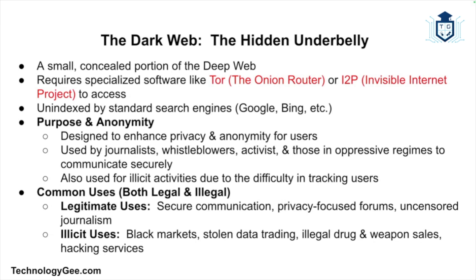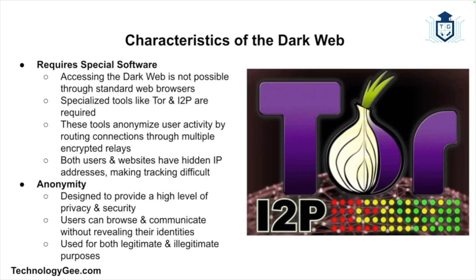The dark web is a small, intentionally hidden portion of the deep web that is not only unindexed by search engines but also requires special software to access. It is a part of the internet that is deliberately concealed from the public and is often associated with illegal activities and anonymity. However, it is important to note that the dark web is not inherently illegal or dangerous — it is simply a tool that can be used for various purposes, both good and bad.